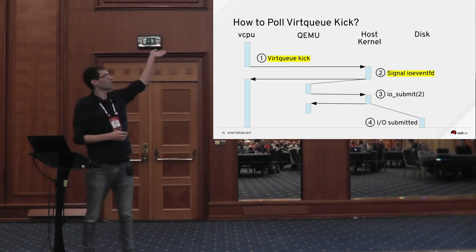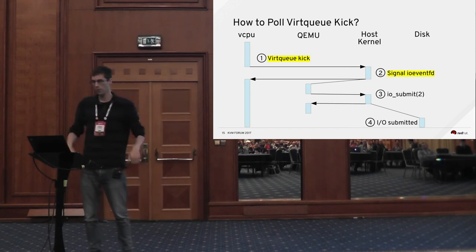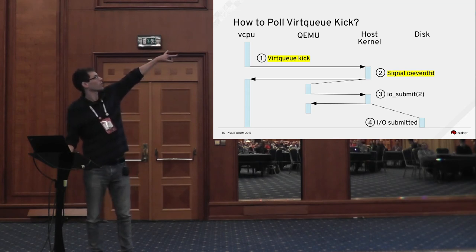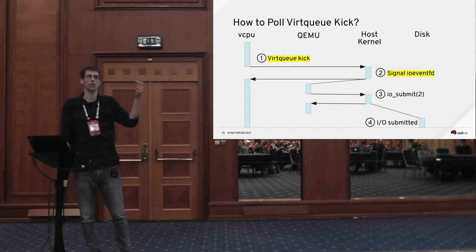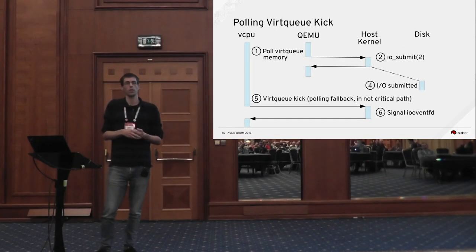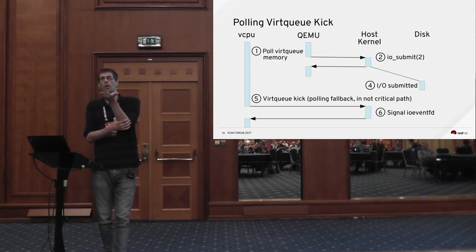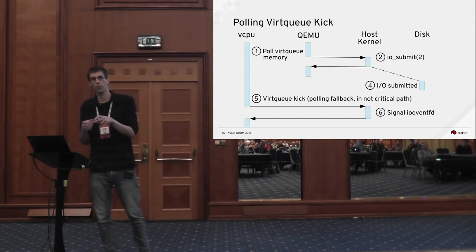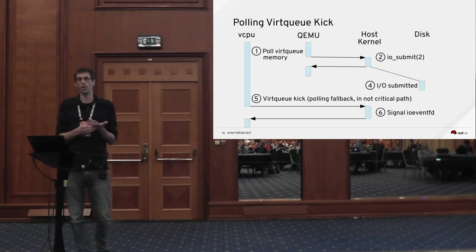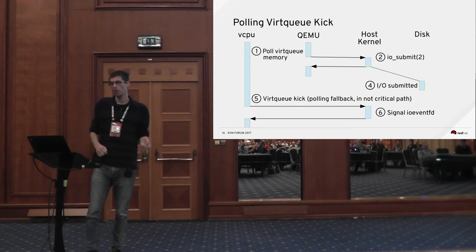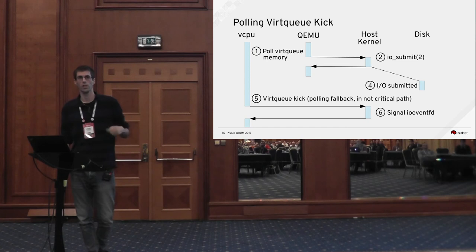On the VirtioBlock submission path, the steps that can incur extra latency are when we signal the eventFD and need to get scheduled. The trick is we don't actually need to wait for the eventFD — QEMU has access to guest memory and access to the descriptor ring. So it can just peek inside the descriptor ring and see as soon as the guest driver has put a request in there, without waiting for the kick at all. That's how we poll the descriptor ring. We still keep the virtqueue kick though, because the adaptive algorithm will eventually fall back to the eventFD for slow requests.